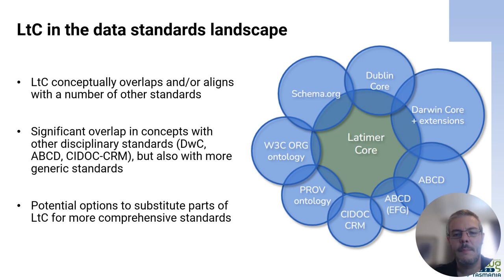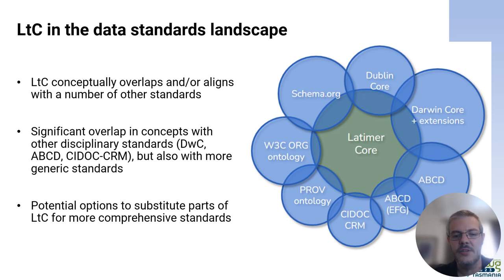Looking at Latimer Core from a mapping perspective, where does it fit into the data standards landscape? Latimer Core is basically about collections, the people involved in them, and the organizations that hold them, so there are clear conceptual overlaps with a range of other data standards — especially those focused on specimens and occurrences like Darwin Core, ABCD, and the EFG extension, and the CIDOC conceptual reference model. There are also intersections with standards less specific to the natural science domain but best-of-breed for describing people, organizations, and activities, including the PROV provenance ontology and the organizational ontology, both provided by the World Wide Web Consortium, and schema.org.